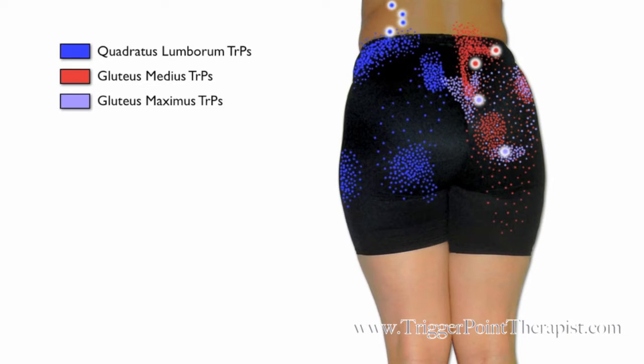In purple, we have the gluteus maximus trigger points, which primarily cause pain in the gluteal region, but also into the sacrum.